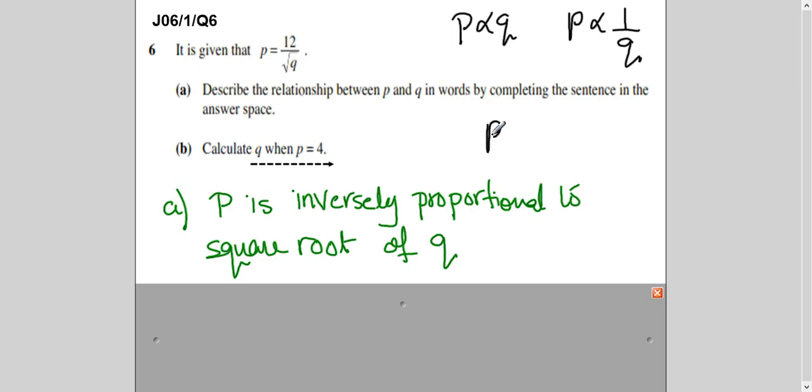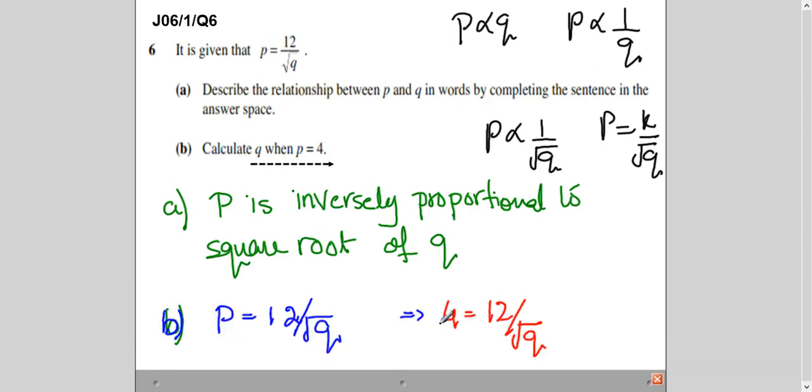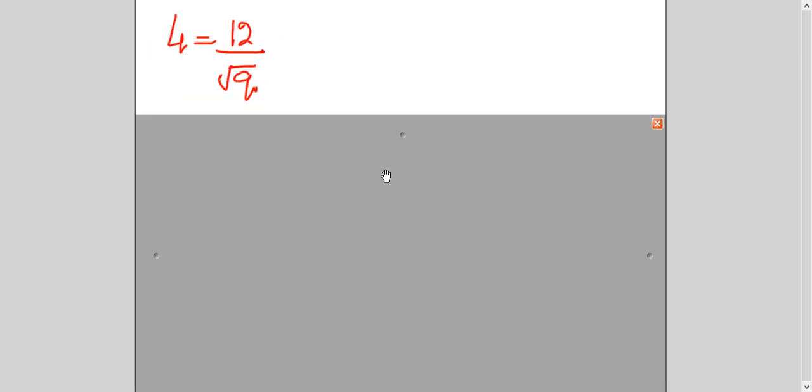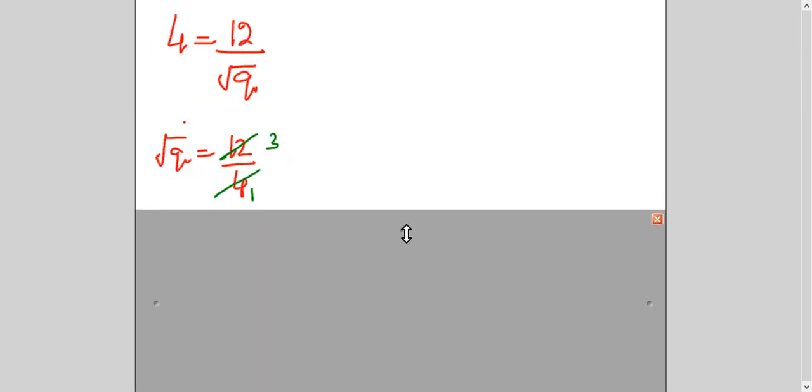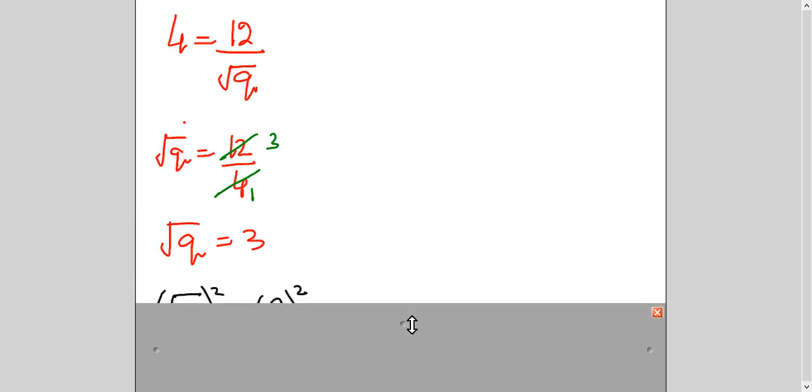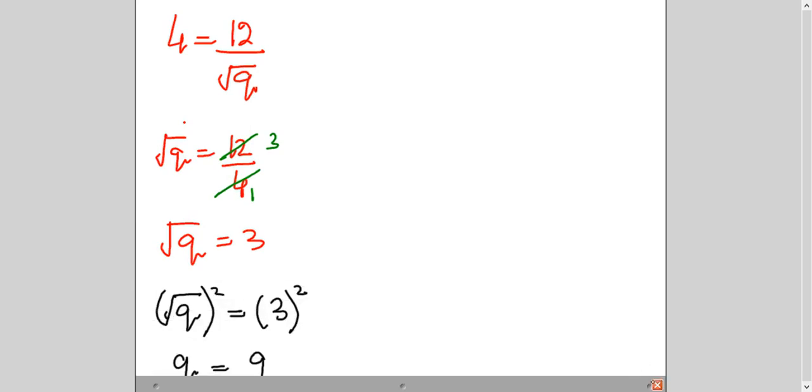Because otherwise if it was written it would be written like this. And when you remove proportionality symbol you write K upon root Q. Like we have done in the previous two questions. Anyway. So this question is different. Value of K is already given to you. You have to calculate Q when P is 4. So you can substitute P here. 4. And then simple calculation. I'm sure you are confident and comfortable with that. And then you will take the square on both sides. Because you have to find out the value of Q. So by squaring both sides you get the value of Q. So this is how you solve the question of inversely proportional variations.